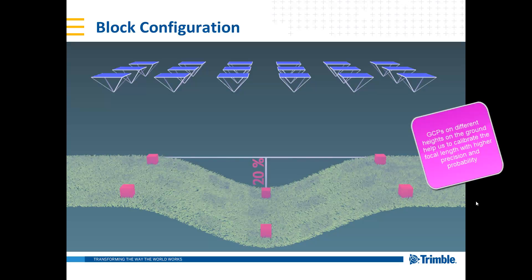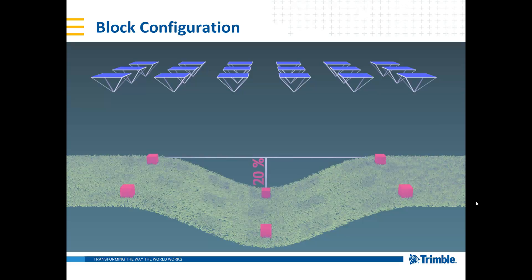What would help us is if the control points on the ground were placed at different heights. If they are positioned with more than a 20% height ratio difference relative to the flying height, then we can calibrate the focal length very accurately. With this configuration it is very good because we can measure tie points and control points at different heights, and therefore the focal length can be extracted very accurately for this block.